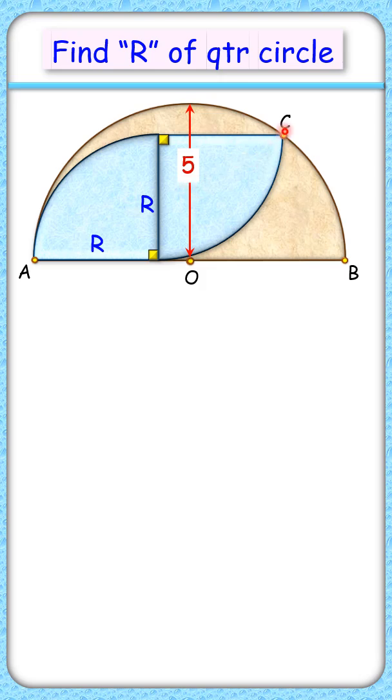Let's drop a perpendicular from point C on AB. This length CD will be the same as R cm. And here this length AD, that will be R plus R or 2R cm. The full diameter is 10 cm, so DB length will be 10 minus 2R.